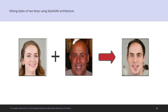Here you can see the mixing of two styles of human faces using the StyleGAN architecture. When these two human faces are mixed, the system generates a third image by finding a pattern in the training examples.